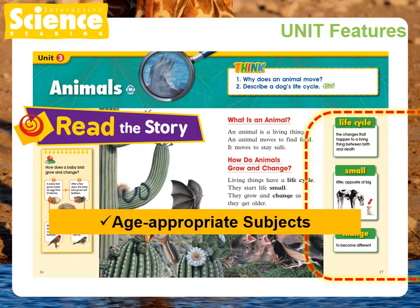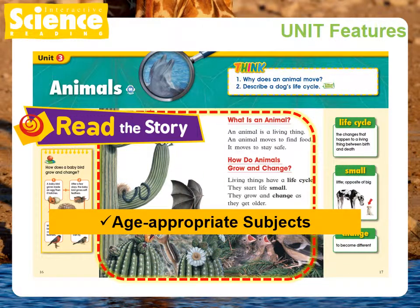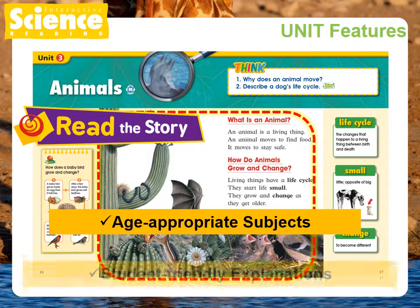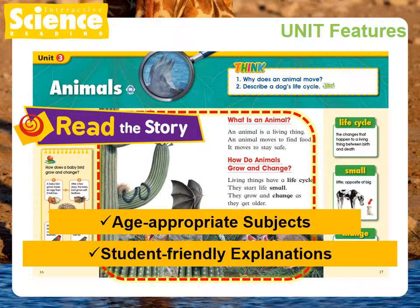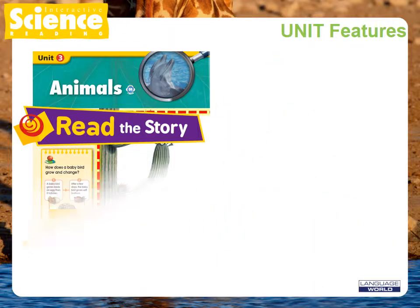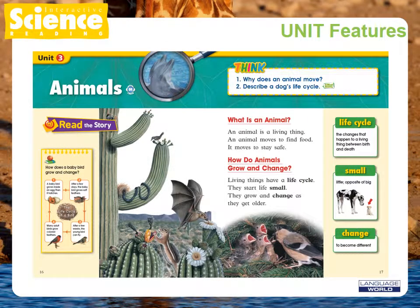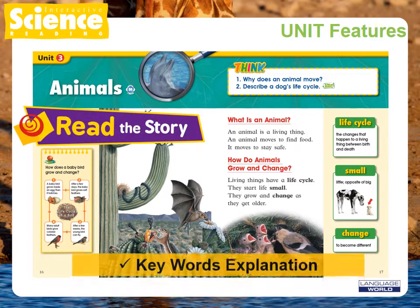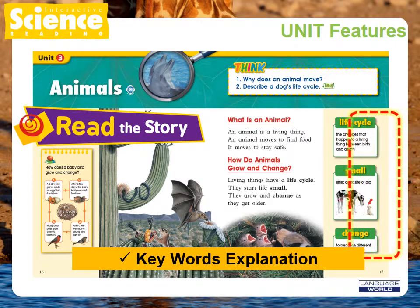Each unit story covers age-appropriate subjects about life science, physical science, earth and space science, and technology and society. Students will be able to understand abstract science concepts through student-friendly explanations in each passage with colorful illustrations and photographs. Students will also be able to see how the keywords introduced at the sides of the pages are used in context.